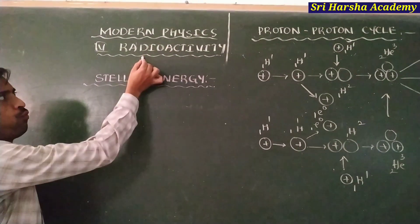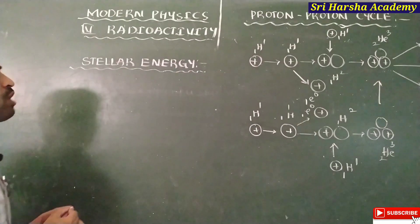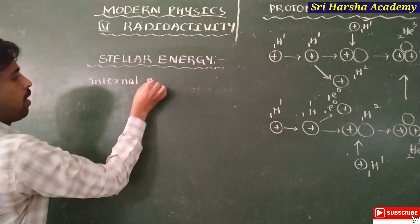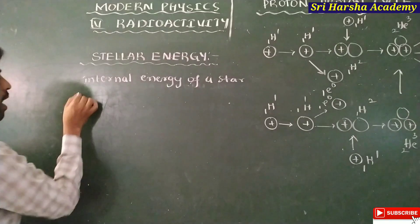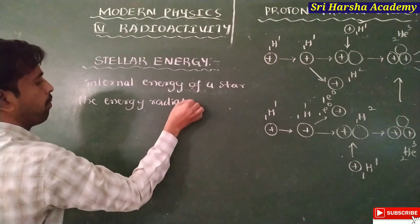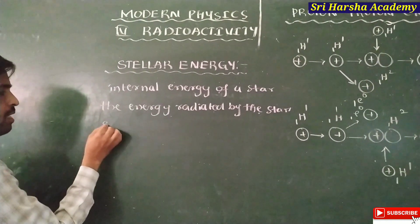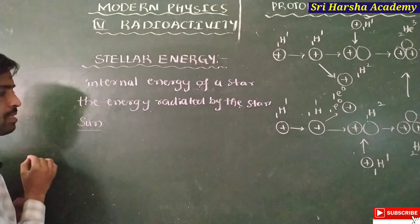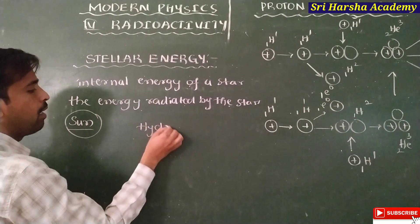Students, in modern physics, paper fourth unit radioactivity, in this chapter I want to explain about stellar energy. Stellar energy is nothing but the internal energy of a star, or otherwise the energy radiated by the stars. We know that the sun is nothing but a star. Most probably nuclear fusion is developed especially in the sun. The sun is most probably a combination of hydrogen and helium atoms.